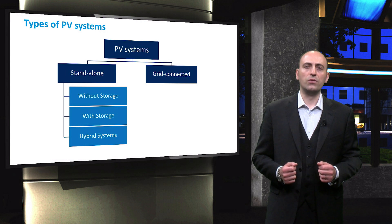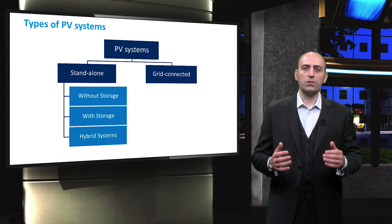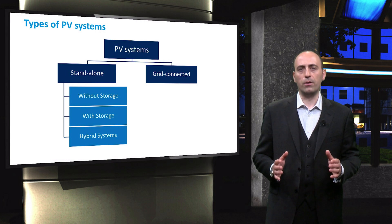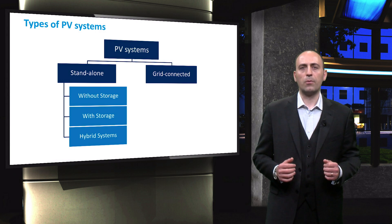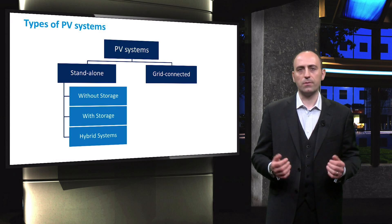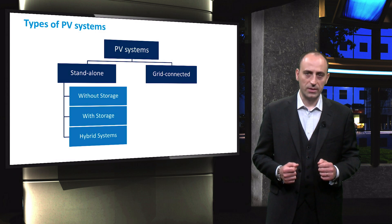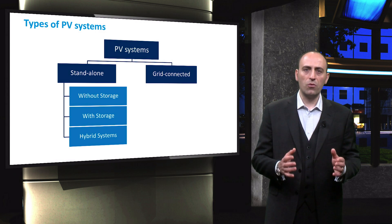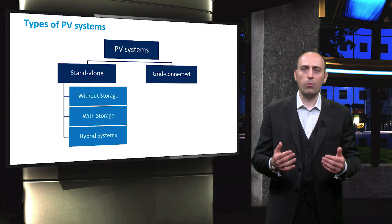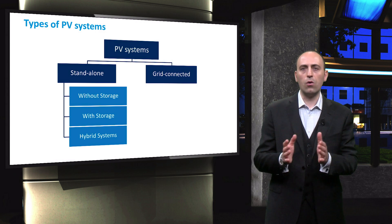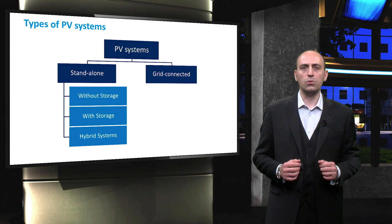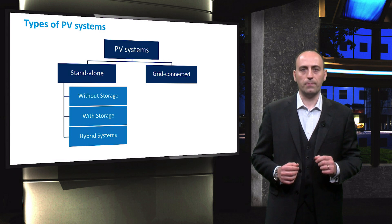As we will see over the next couple of slides, the first two subgroups rely only on solar power. These subgroups can include energy storage, such as batteries. The third subgroup, instead, is a hybrid system, where the PV production is coupled either with wind turbines or with a diesel generator. Let's go through these configurations one by one.